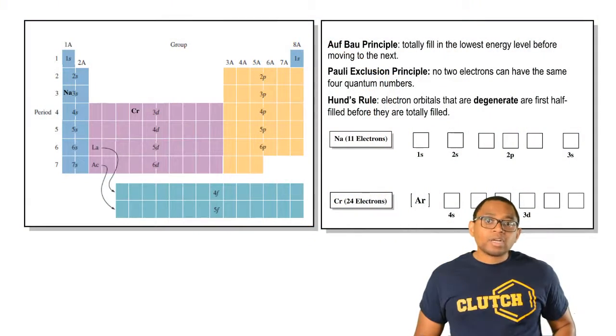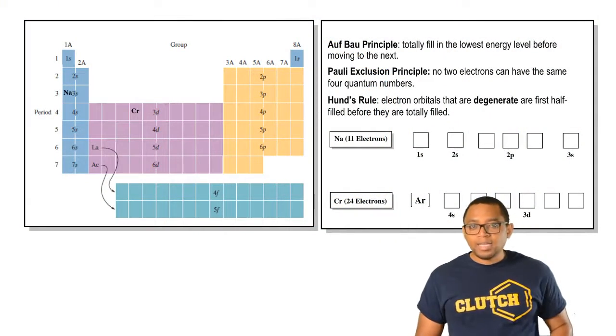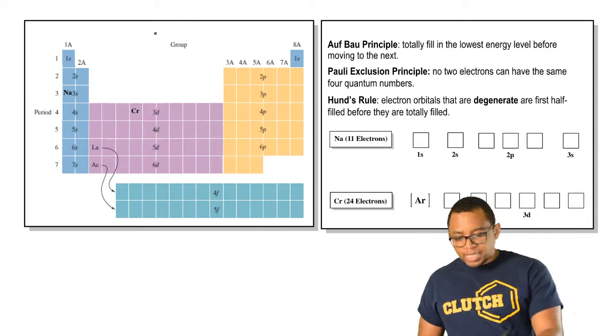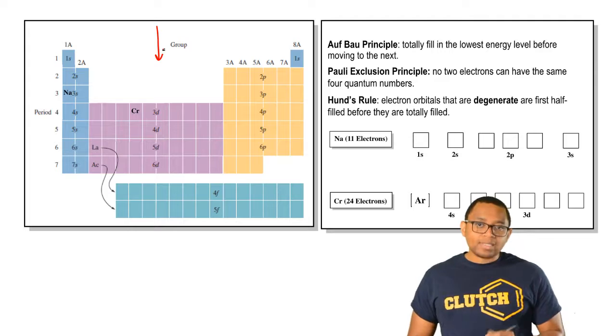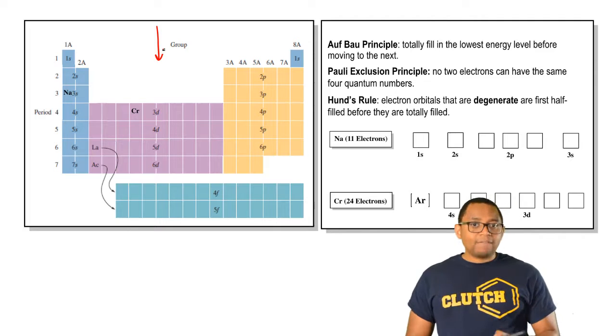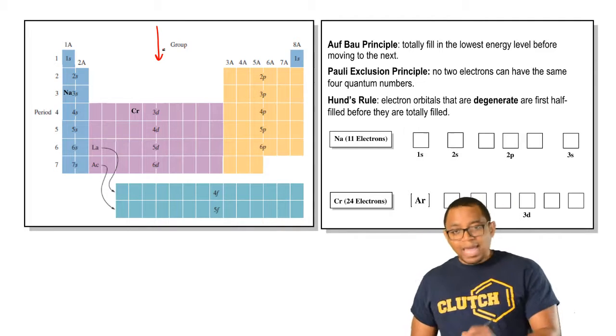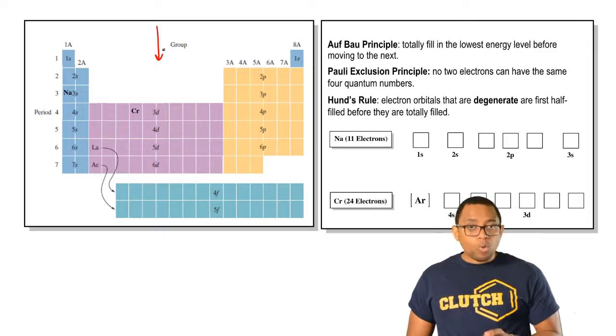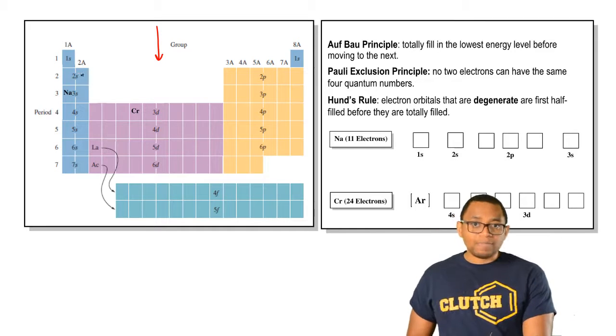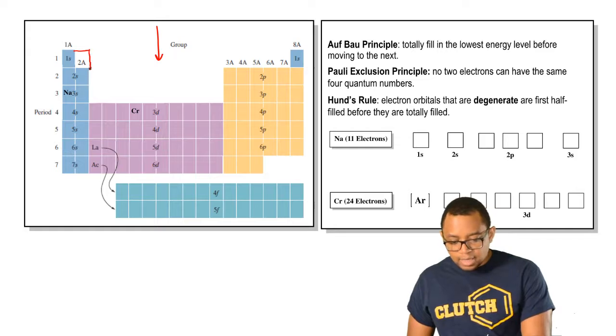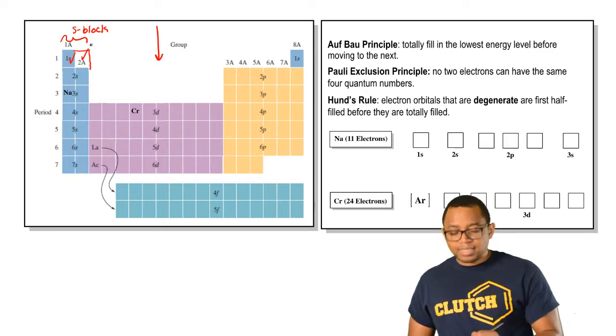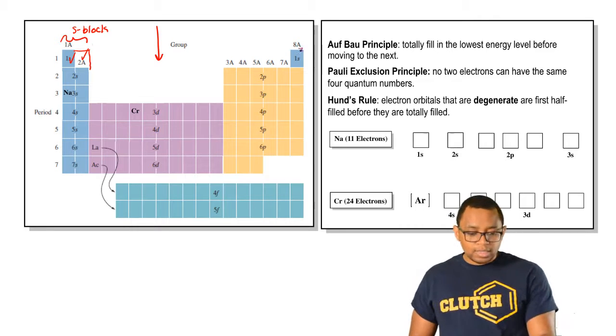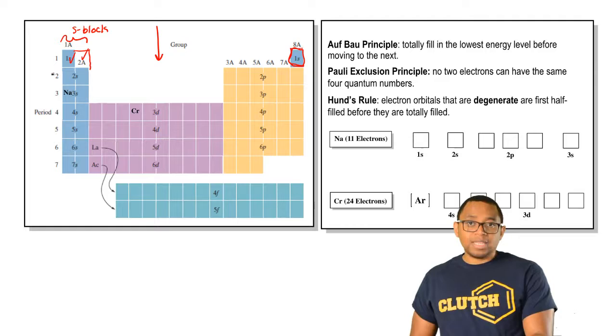When it comes to writing out the electron configuration of an element or ion, it's important to reimagine the periodic table as looking like this. Now remember, we have our S, P, D, and F sublevels. S has one orbital, which means it can hold up to two electrons, so that's why with the S block we have two slots because S can hold up to two electrons. So this moves over to that side.